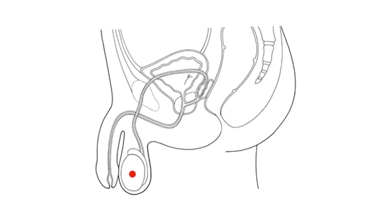Sperm are produced in the testes. They mature in the epididymis and travel into the body via the vas deferens, ultimately stored in the ampulla behind the prostate gland. Next to the ampulla is the seminal vesicle, which makes the majority of seminal fluid. Upon ejaculation, sperm from the ampulla and seminal fluid from the seminal vesicles are released into the ejaculatory duct within the prostate, then exit via the prostatic urethra and finally the spongy urethra.